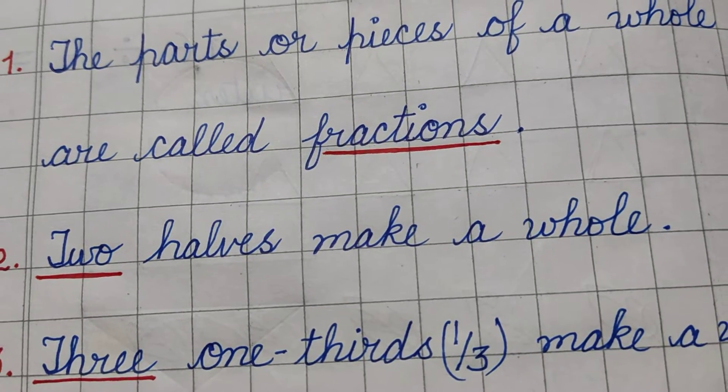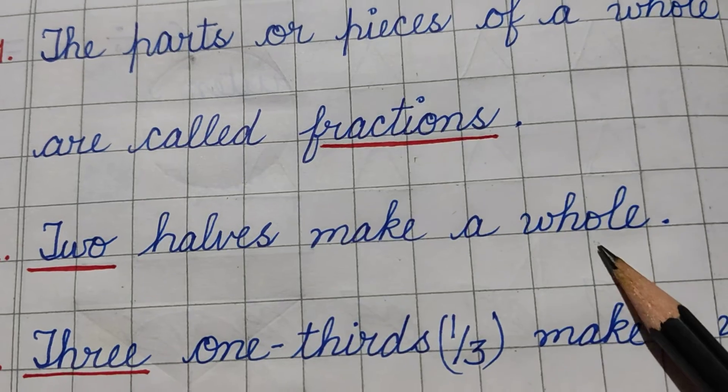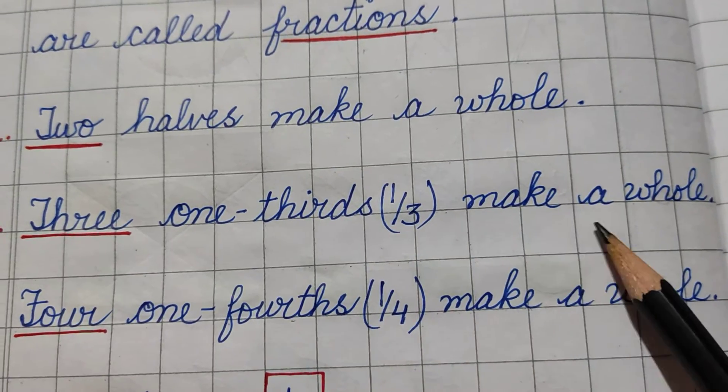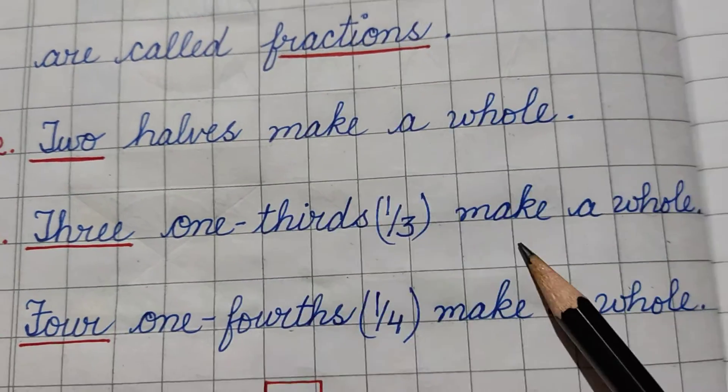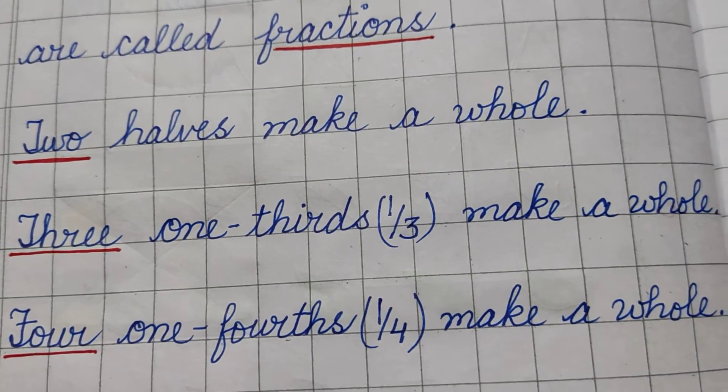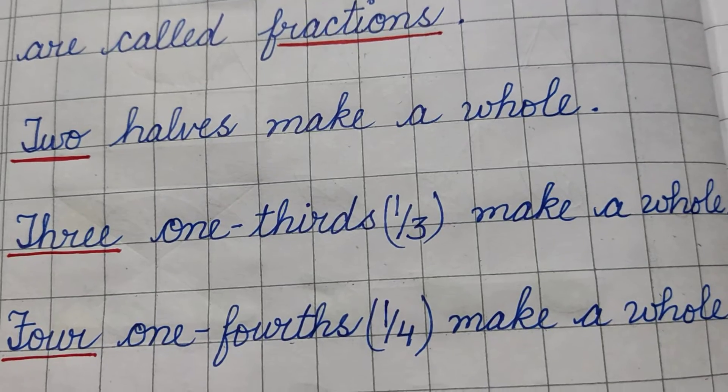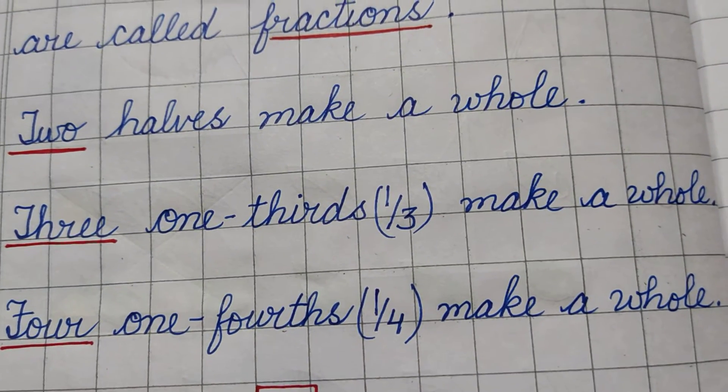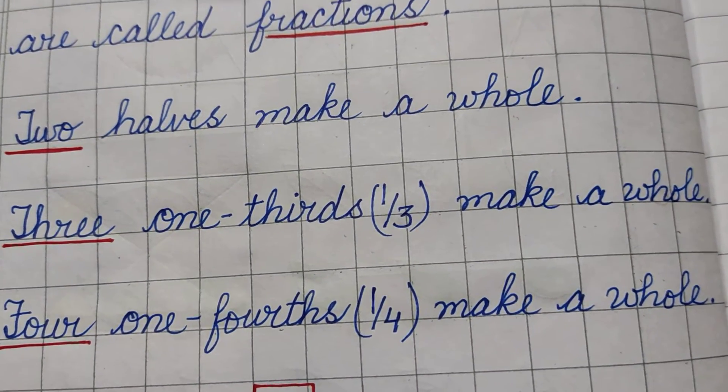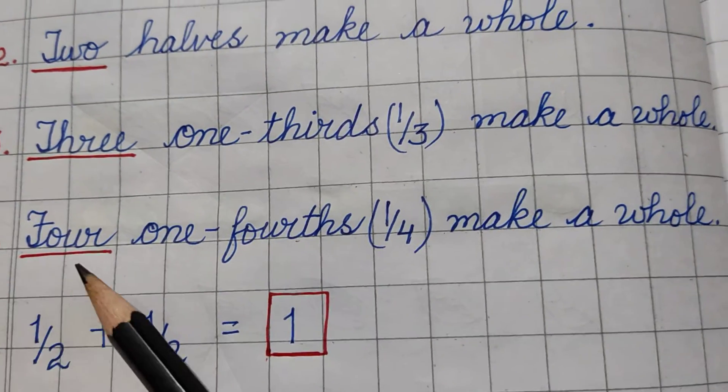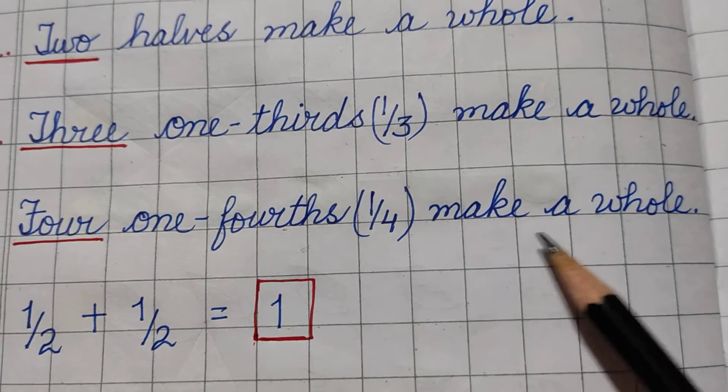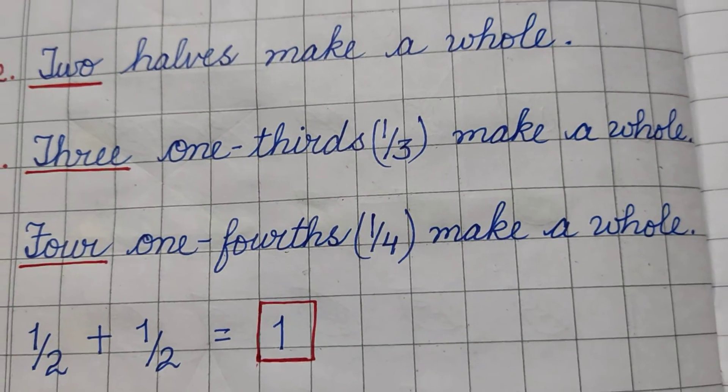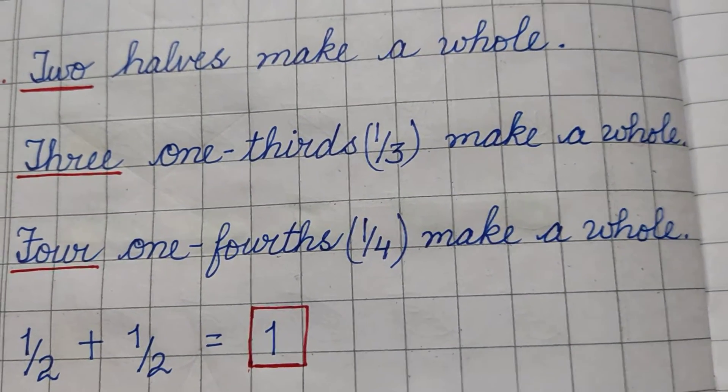Three one-thirds make a whole. Now number 4th is four one-fourths make a whole, four equal parts, one complete whole.